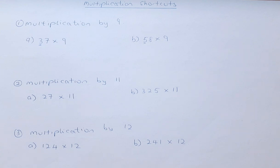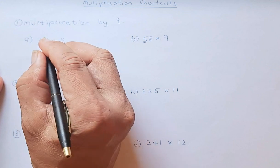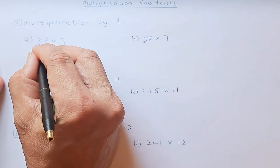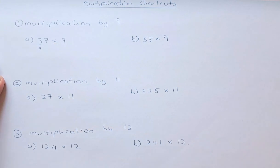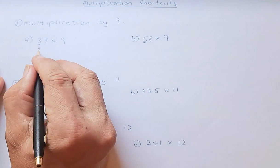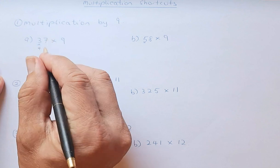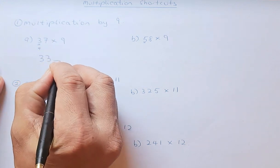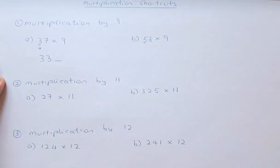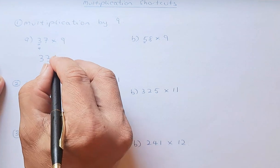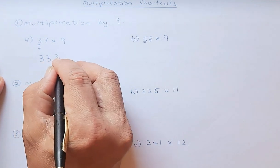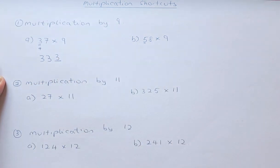The first multiplication we're going to learn is multiply by 9. For a 2-digit number, for example 37 times 9, you increase the first digit by 1, so 3 becomes 4. Then subtract 4 from 37, giving 33. The last digit must make the digits add up to a multiple of 9 — so 3 plus 3 plus 3 is 9, giving the answer 333.